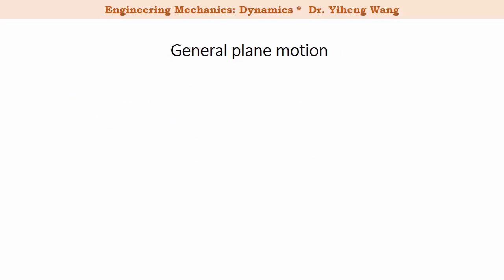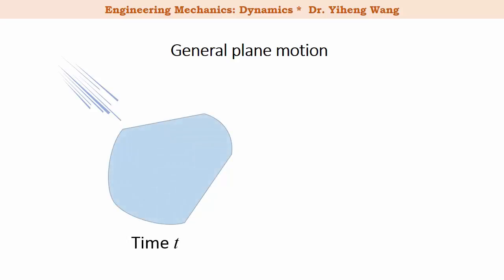Let's imagine at an arbitrary time t, an object has moved from somewhere to its current location with the current orientation. After a very short time period dt, it has moved to a new location with a new orientation. This object has both translated and rotated within this plane, and the combination of both translation and rotation is known as general plane motion.